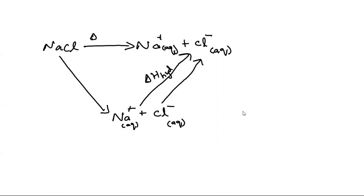This shows Na+ and Cl- ions. This is delta H solution, and this is negative delta H lattice. This is a positive enthalpy change, and this is negative. Delta H solution is equal to negative delta H lattice plus delta H hydration.